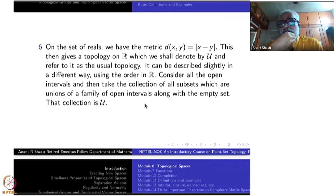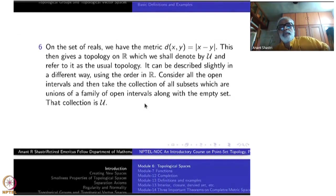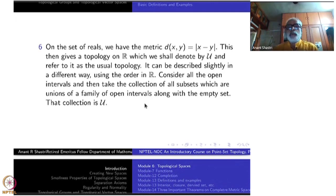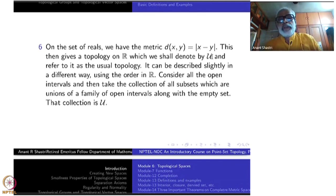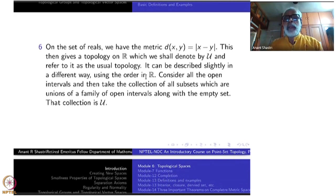Now I come to more familiar things. These examples were just to tell you that metric is not sacrosanct — there are many other ways of getting interesting topologies. Coming back to the real numbers: the metric d(x,y) = |x−y| gives you the usual topology, also called the Euclidean topology, denoted by 'u' by almost all authors.